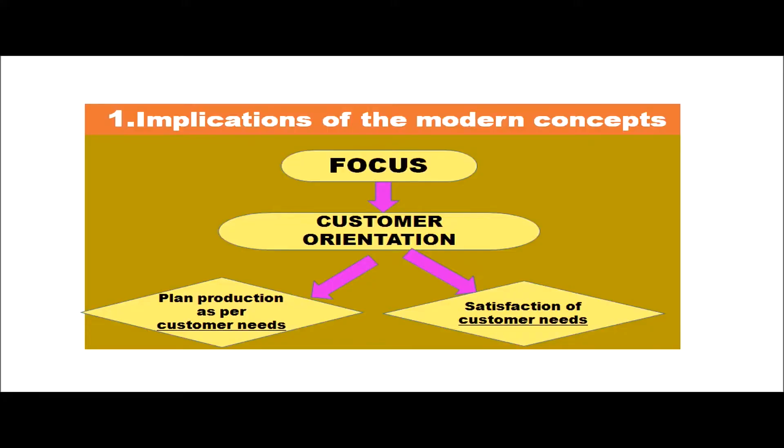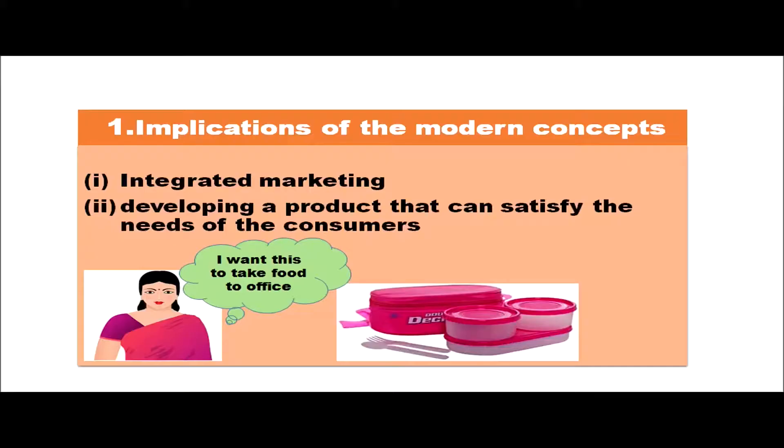Now let us see the implications of the modern concept. In the modern concept, the focus is on customer orientation — that is, plan production as per customer needs and then satisfy consumer needs. First they identify what the customer needs, then they produce the products accordingly, and then through sales promotion techniques they satisfy the customer. The first implication is integrated marketing, then developing a product that can satisfy the needs of the consumers. Basically the consumer is the king — first we find out what the consumer needs and then we develop the product accordingly.